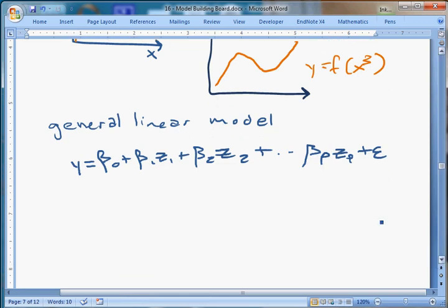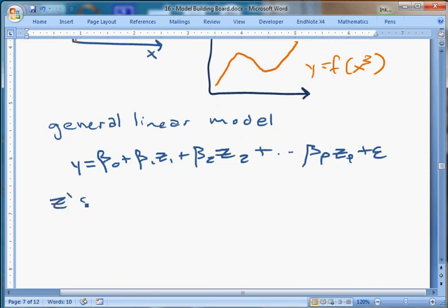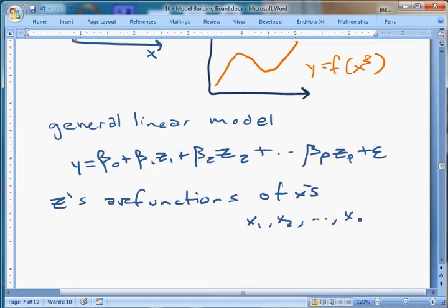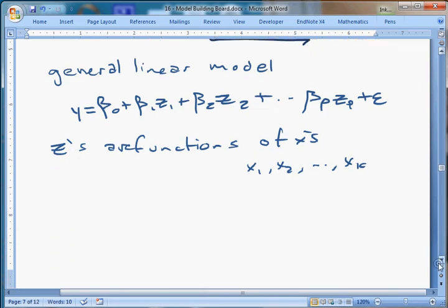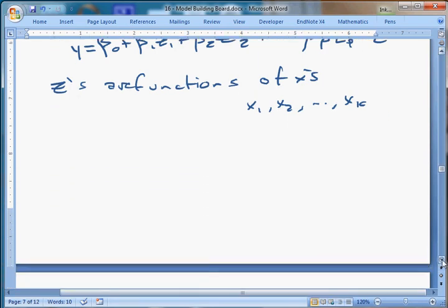And the much better answer is that we already know how to solve this problem really pretty easily. We just haven't talked about it yet. So what we do is we develop what's called the general linear model, which looks like this.